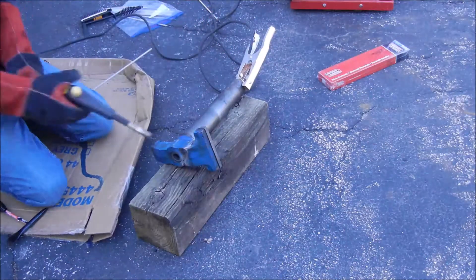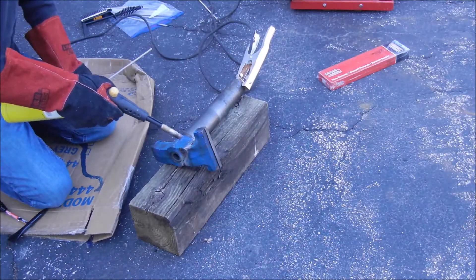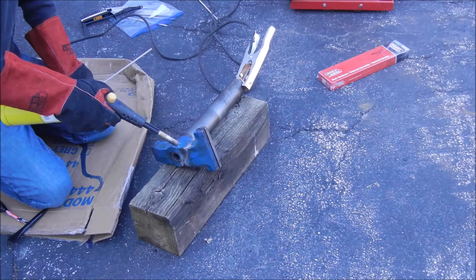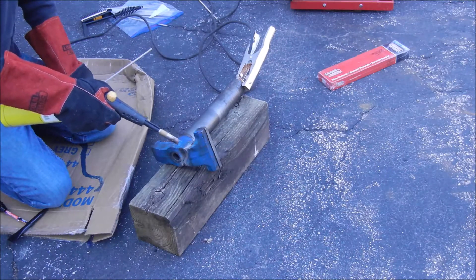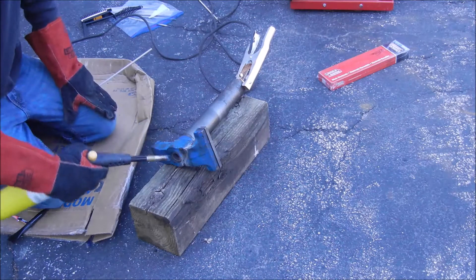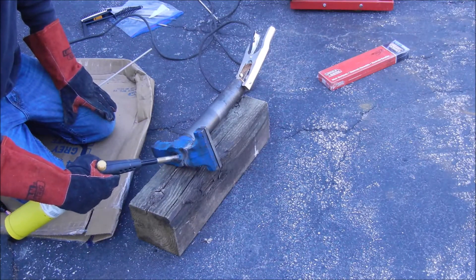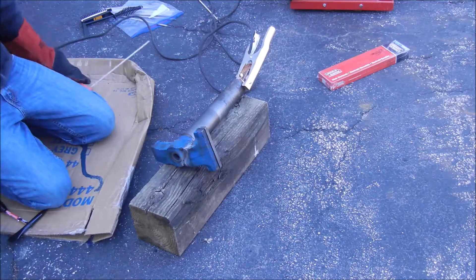Cast iron tends to develop cracks in it when it's cooling, so if you peen it, it helps reduce those. I'm just trying to maintain the preheat throughout to keep the temperature of the piece as even as I can.